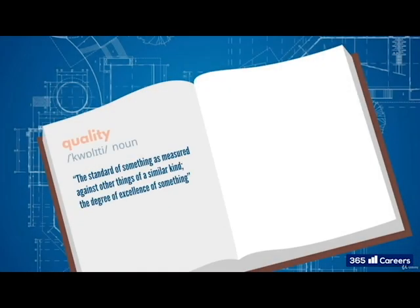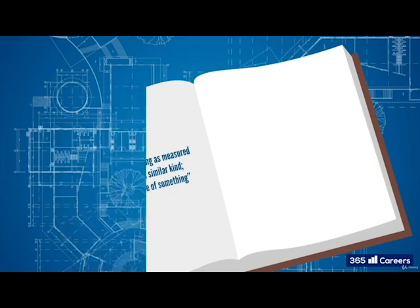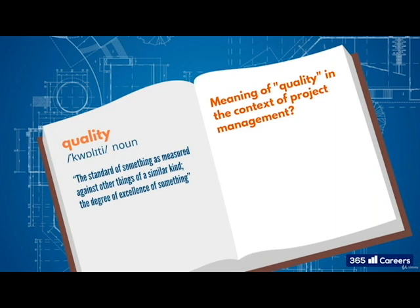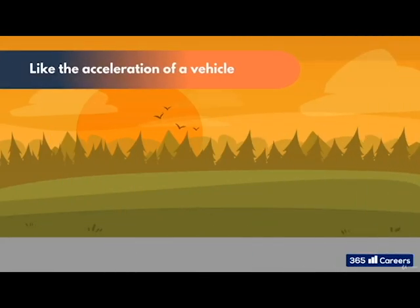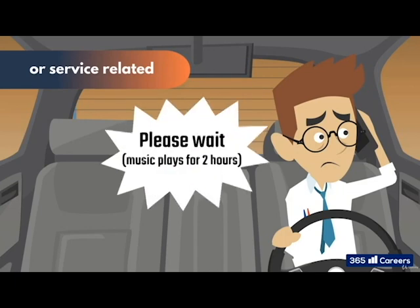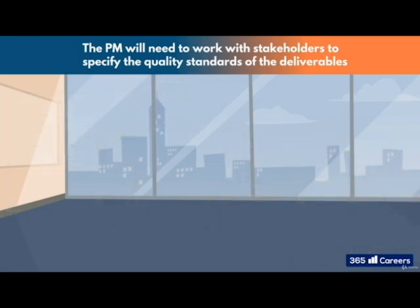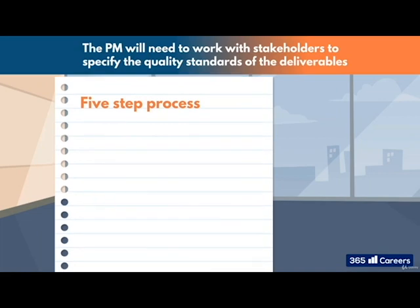The standard of something as measured against other things of a similar kind — the degree of excellence of something. That's how the Cambridge Dictionary defines quality. We can think of quality as the qualitative characteristics of a product: its physical qualities like its material or contents, its performance like the acceleration of a vehicle, or service-related such as response time in a customer-facing role. The project manager will need to work with stakeholders to specify the quality standards of the deliverables of the project, and of course to ensure they are being met. To do this, there is a wonderful five-step process to follow.